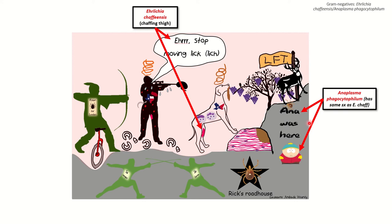'Ana' is here for Anaplasma, and I have Cartman representing 'phagocytophilum.' I use Cartman to represent any prefix of 'phago' because I always think about him eating that bucket of chicken skins — phagocytosis means 'to eat' in Greek. It's just such a funny association, so that is my recurring mnemonic for the prefix phago.